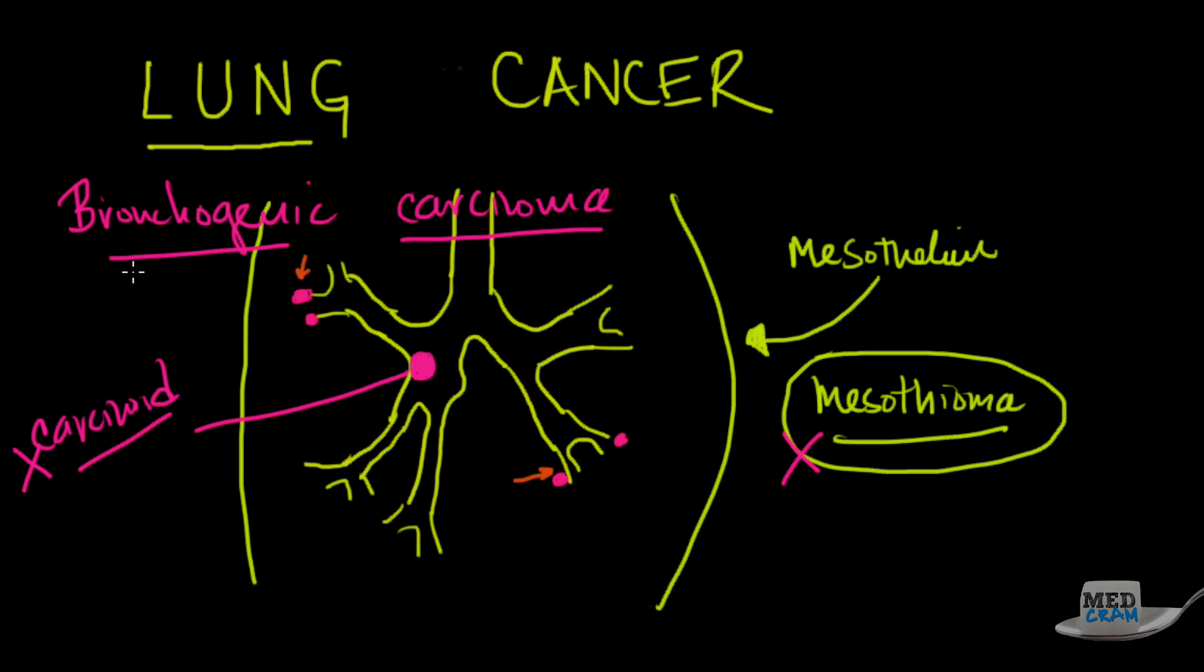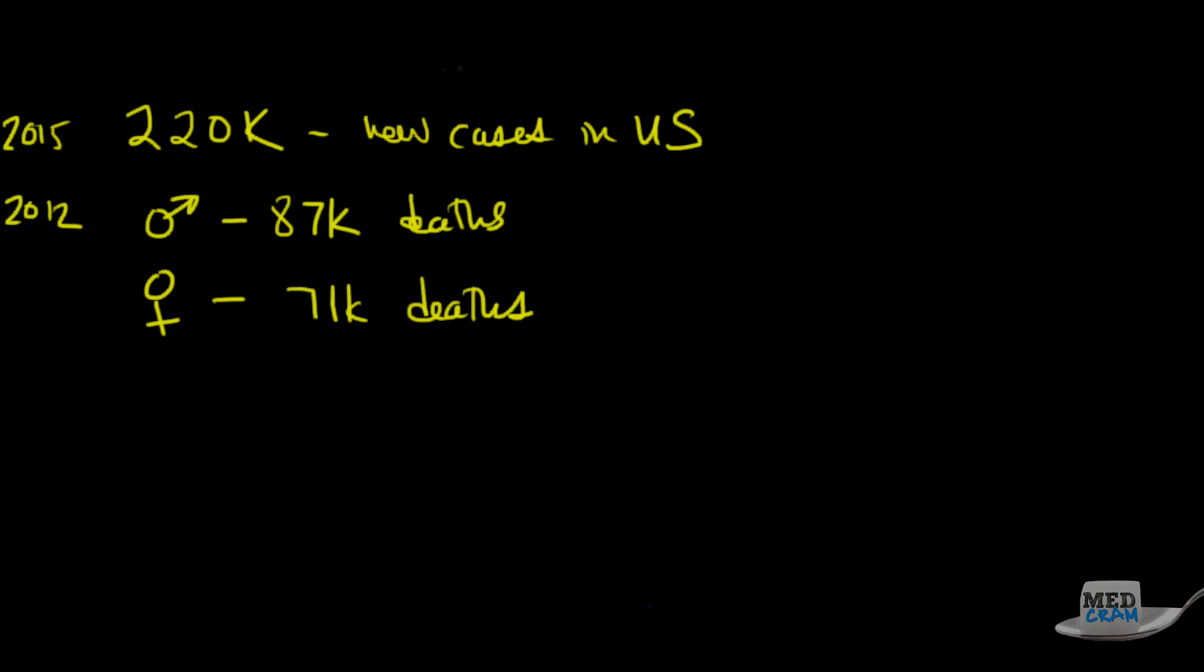We'll talk a little bit about how that's divided. So bronchogenic carcinoma is what we're going to talk about today. Let's talk about some statistics you should know in terms of epidemiology. In 2015 in the United States there was about 220,000 new cases. In terms of deaths, in 2012, for men there were about 87,000 deaths, and in women there was about 71,000 deaths from lung cancer.